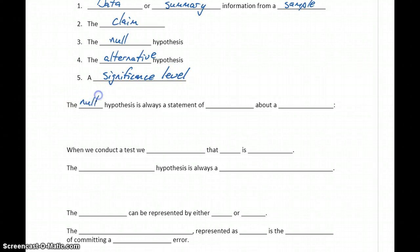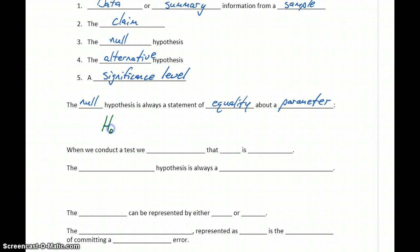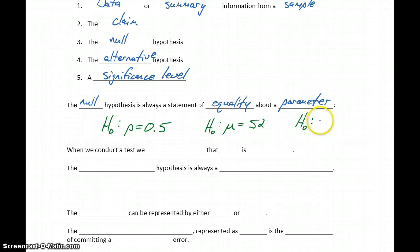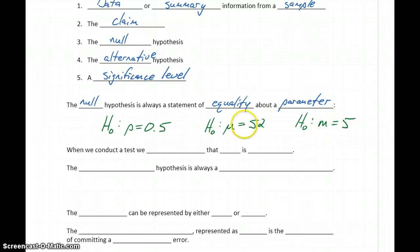The first hypothesis, the null hypothesis, is always going to be a statement of exact equality about our given parameter. The null hypothesis is expressed as H with a subscript 0, so H sub 0. Our null hypothesis could be a statement that our population proportion is exactly equal to 50%. If we were testing a claim about a mean, it might be a claim that mu is exactly equal to 52 or some other value. Or if we were testing a claim about a median, H naught could be a statement that the population median m is exactly equal to 5. Depending on the problem, those numbers will vary, but it's always going to be a statement of equality.